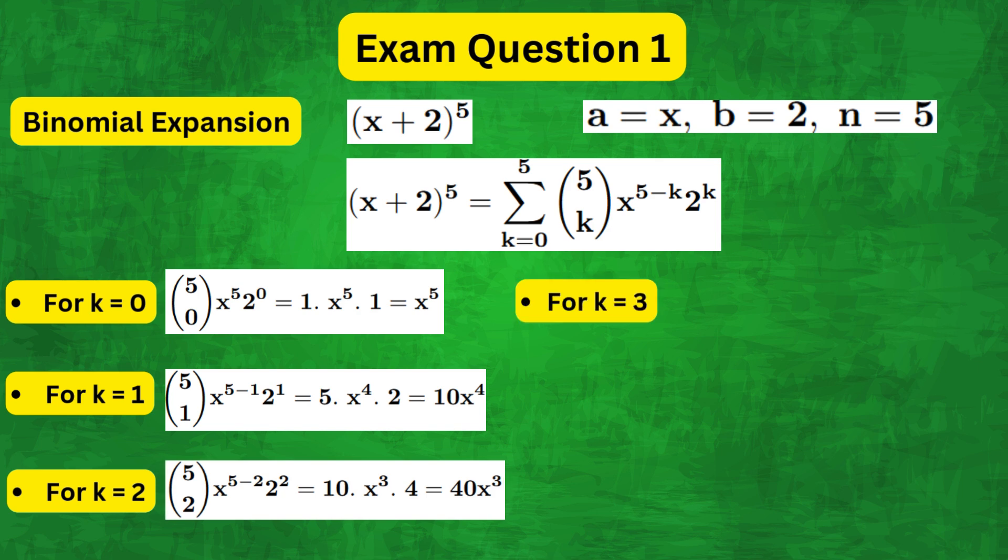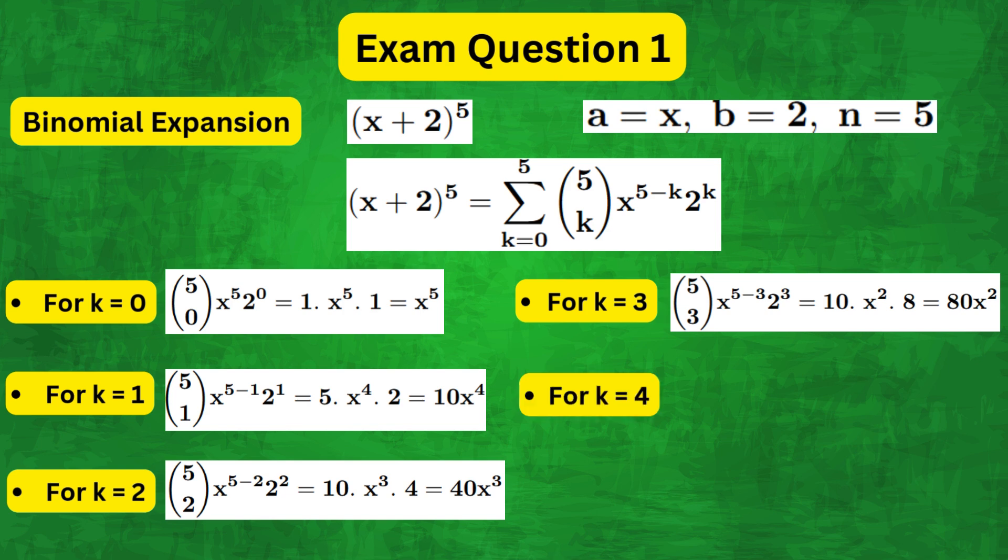For k equals 3, 5 combination 3, x to the power of 5 minus 3 times 2 to the power of 3, which is 80x squared.